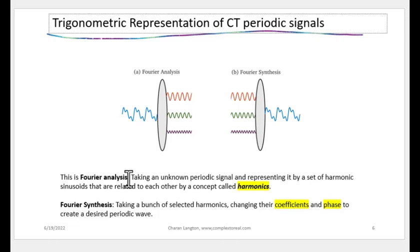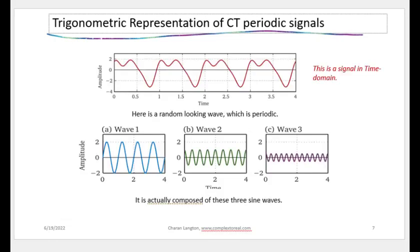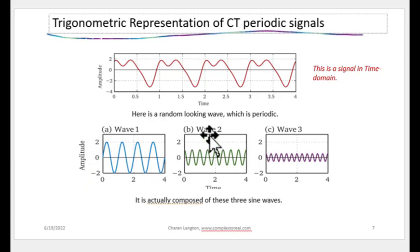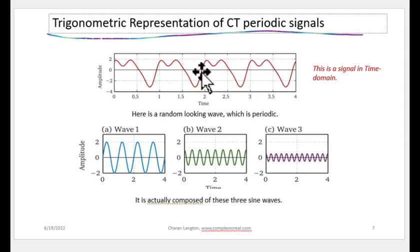Fourier analysis consists of taking an unknown periodic signal and representing it by a set of harmonic sinusoids related by the concept of harmonics. Fourier synthesis is just taking those harmonics, adjusting their coefficients and sizes, and adding them together to recreate the signal. For example, a continuous time periodic signal can be composed of three sinusoids: one with amplitude 2, one at frequency 2 with amplitude 1, and one with amplitude 0.5.